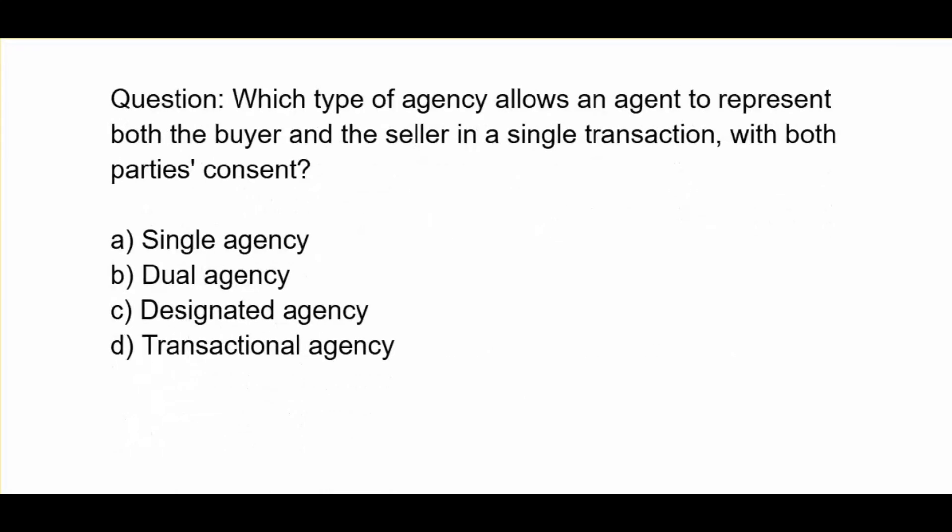Which type of agency allows an agent to represent both the buyer and the seller in a single transaction with both parties' consent? A. Single agency. B. Dual agency. C. Designated agency. D. Transactional agency.